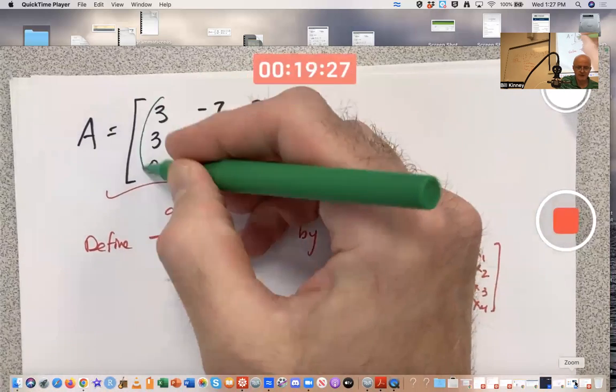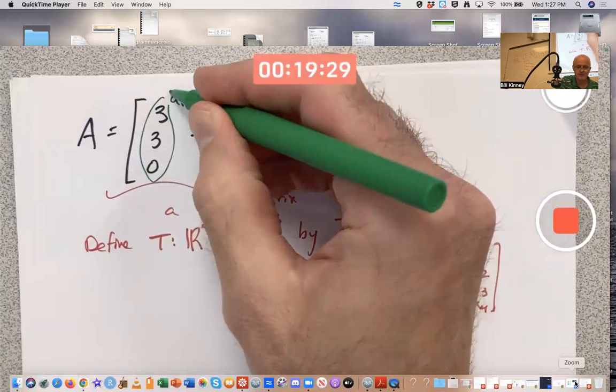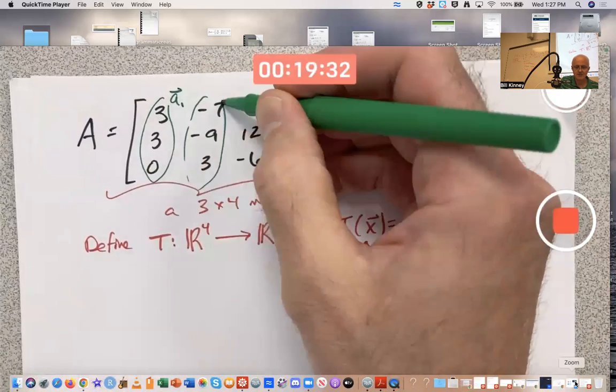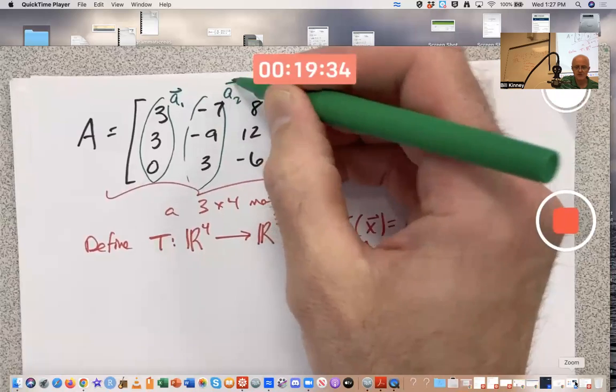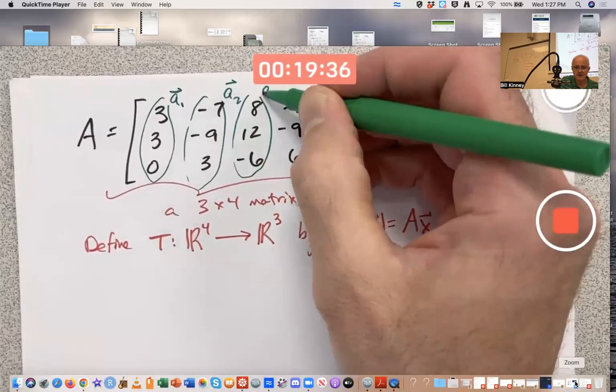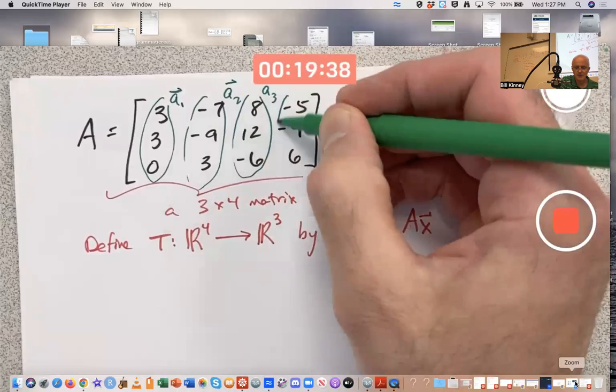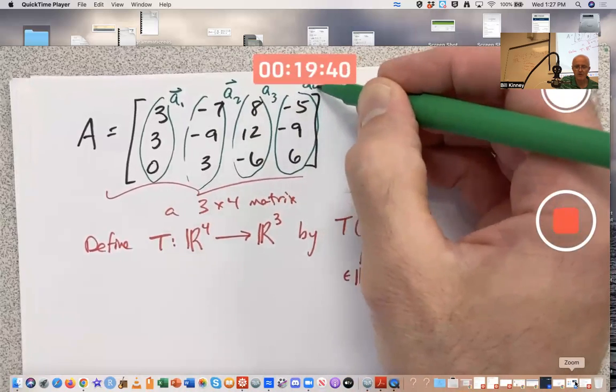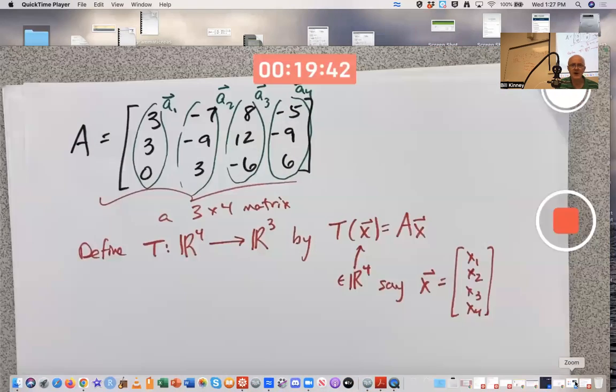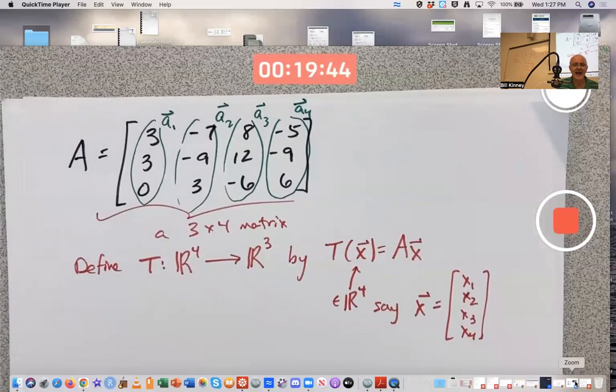With this particular matrix, there's your first column, call it little a1. Here's your second column, call it little a2. Here's your third column, call it little a3. And here's your fourth column, call it little a4. Those are vectors. I'm trying to emphasize that by putting a little half arrow above them.